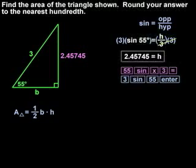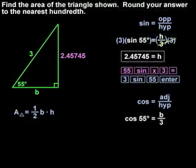To find the value of b, notice that b is the length of the side adjacent to the 55 degree angle, and 3 is the length of the hypotenuse. Remember that cosine is adjacent over hypotenuse, so we can set up the equation cosine of 55 degrees equals b over 3.